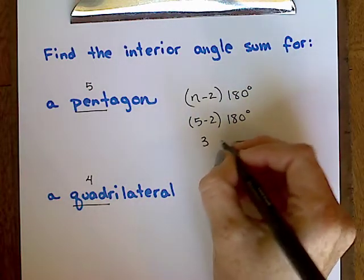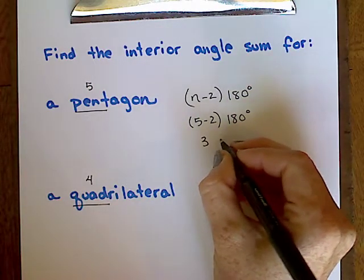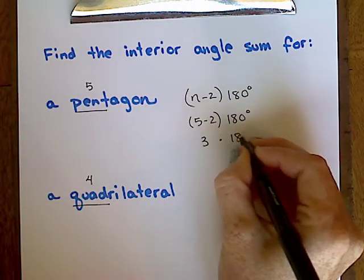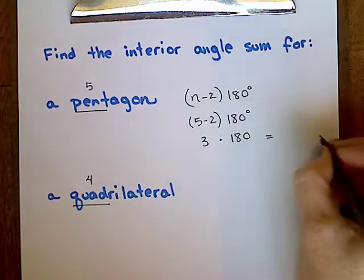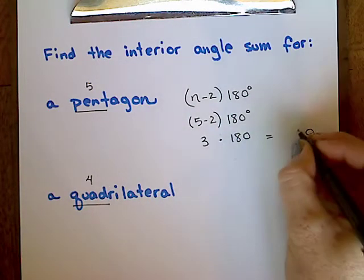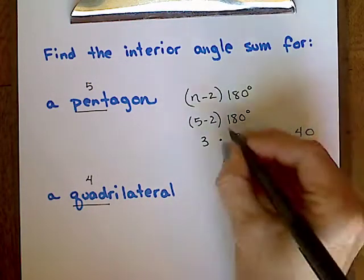Three times 180 is 540 degrees, which is the sum of the interior angle measurements for a pentagon.